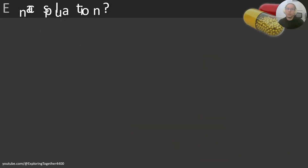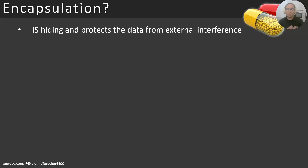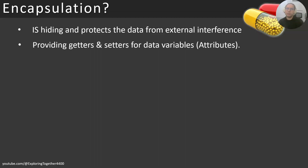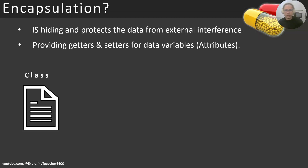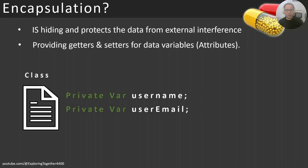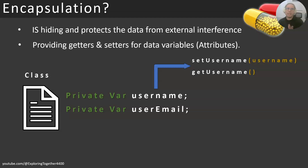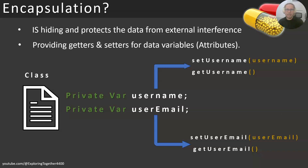That takes us to encapsulation. What does it mean to encapsulate something? In simple terms, encapsulation is hiding and protecting data from external interference — it's a protection mechanism. You achieve encapsulation by providing getters and setters for your variables. In this visualization, a class contains two variables — username and user email — and by marking them with the private keyword, you prevent those variables from being visible outside the class itself.